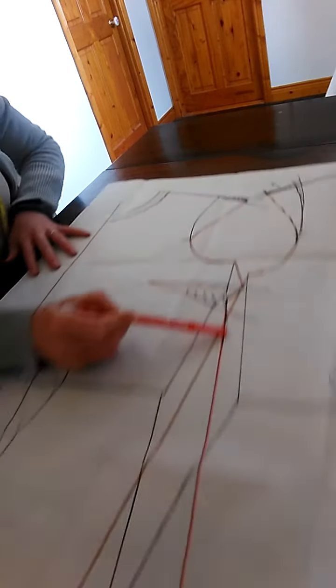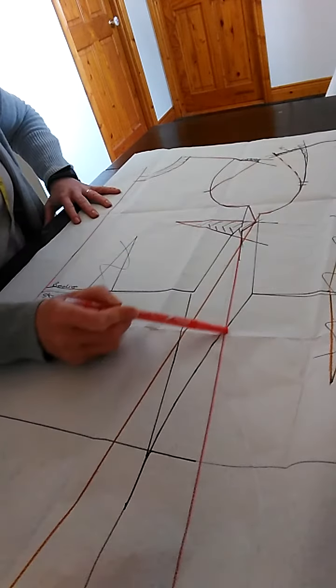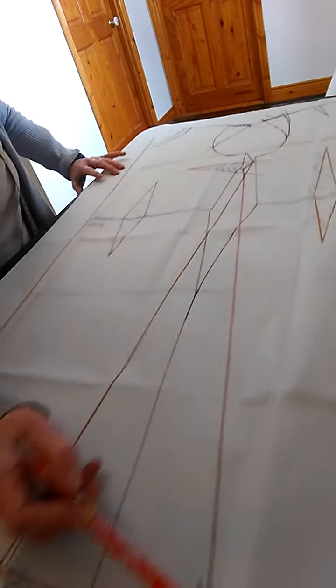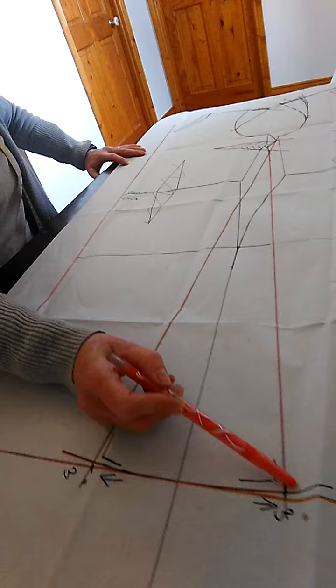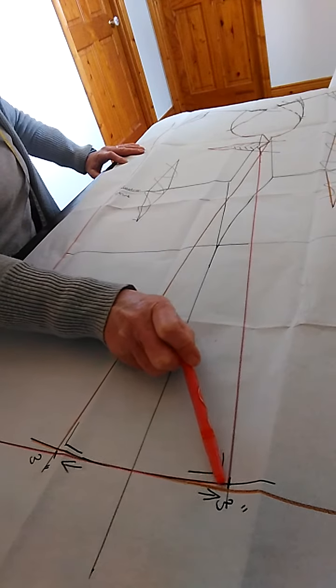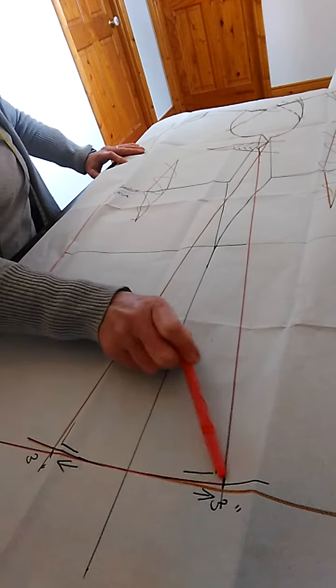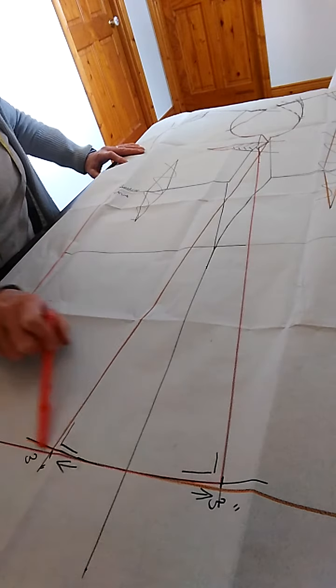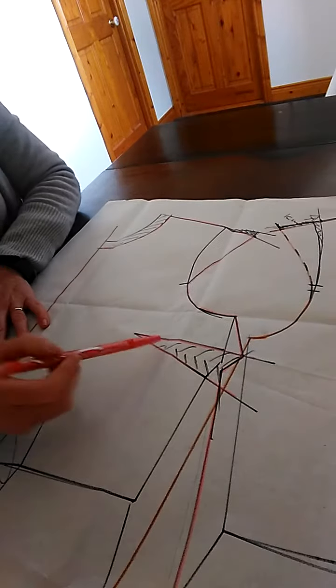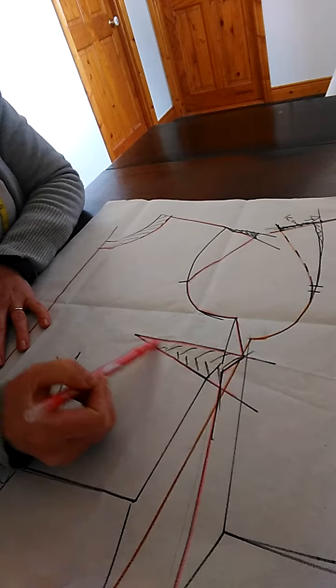And then all the way down your side seam, ensuring to allow for the slightly sloped section here on the side seam, and of course not forgetting to mark in the actual dart.